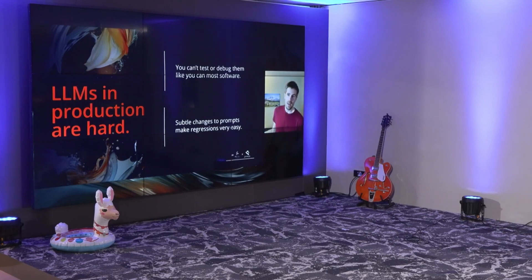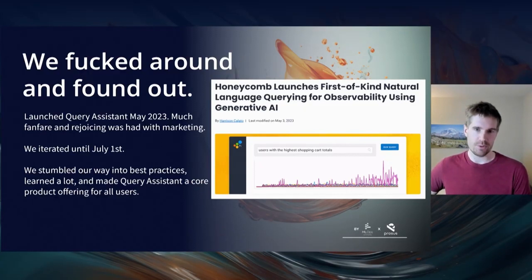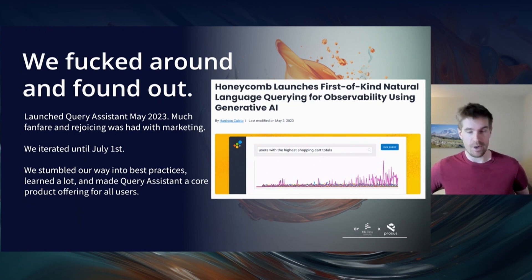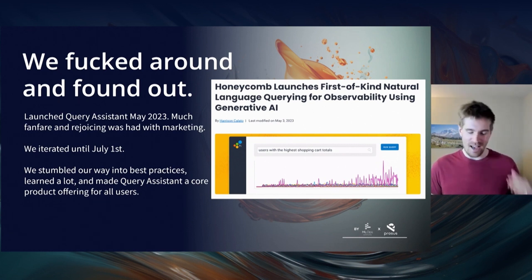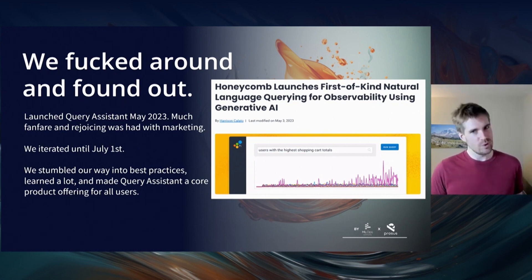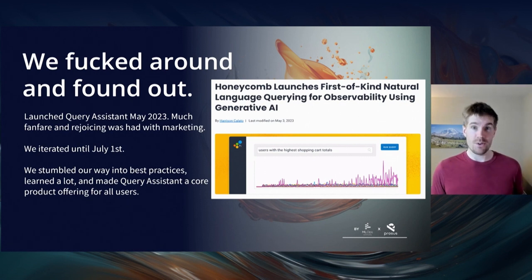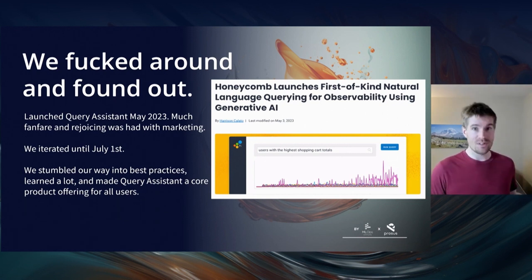Earlier this year, around May 3rd, we — as I like to say — fucked around and found out. We released a natural language querying interface for our product. Honeycomb is an observability tool about querying data, and a lot of people wanted to do that with natural language, so we built that. It was great — we solved about 80% of our use cases in the first release, which was a great marketing moment. But then we iterated, and that's where it actually got hard. There was a 20% long tail of things, and every time we fixed one thing, another could potentially break — and that 20% included use cases our paying customers cared about.